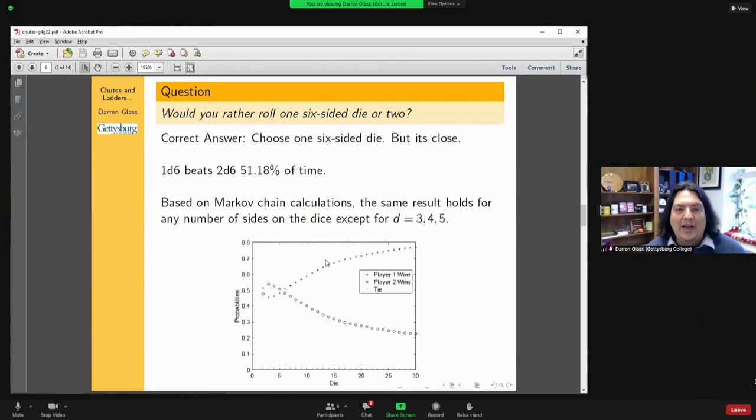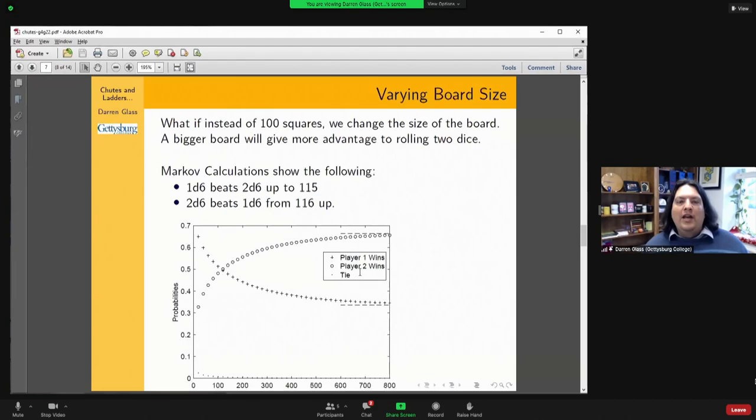We then looked at what happens if you change the size of the die. Well, it's sort of interesting. Basically for bigger dice, it turns out that you're more and more likely to want to choose one die over two.